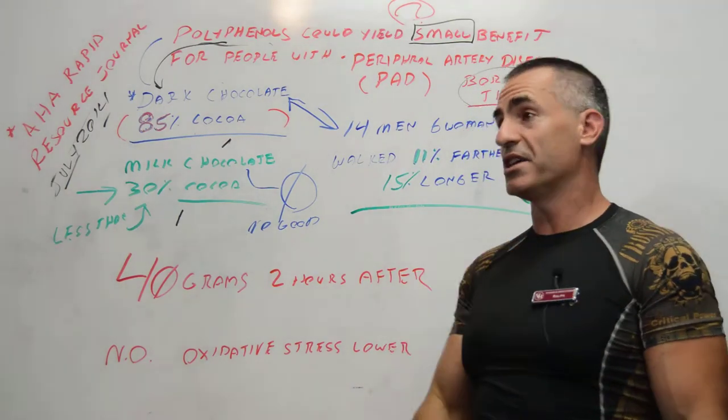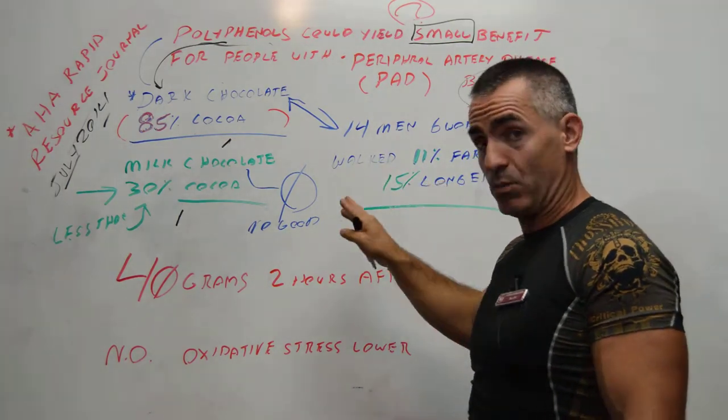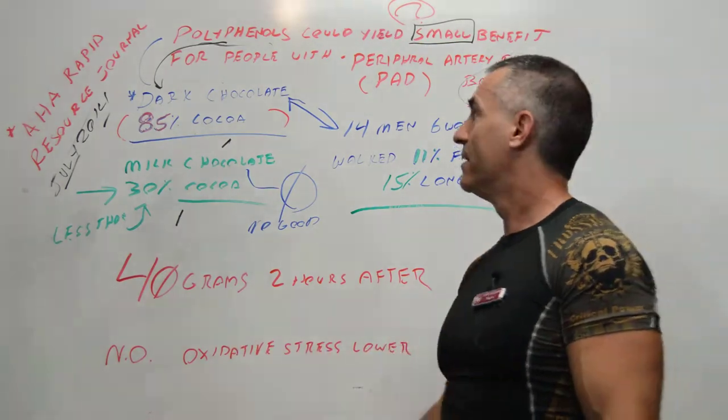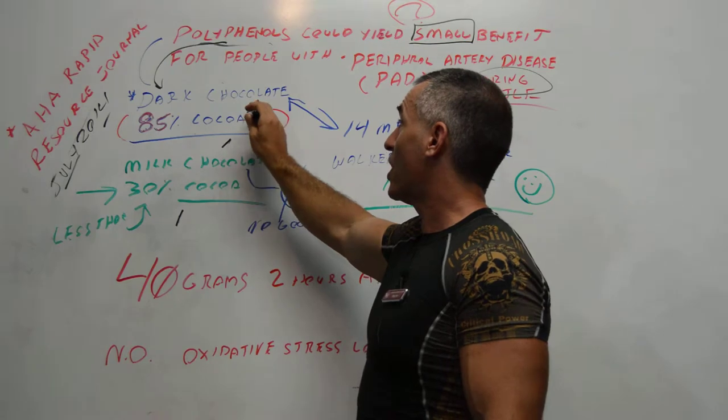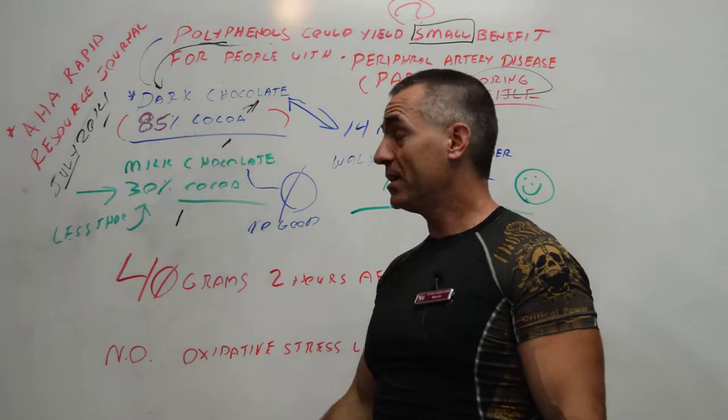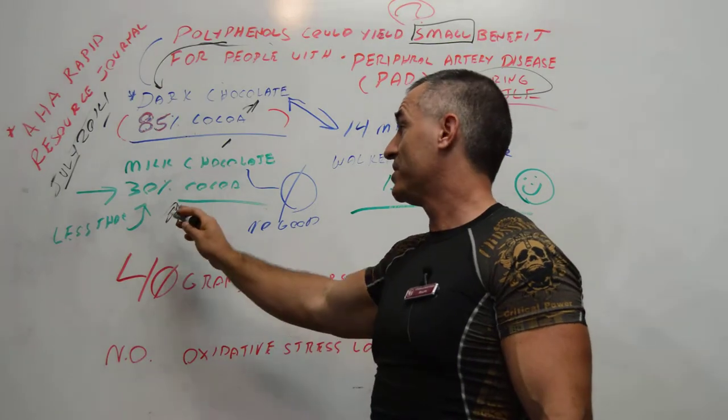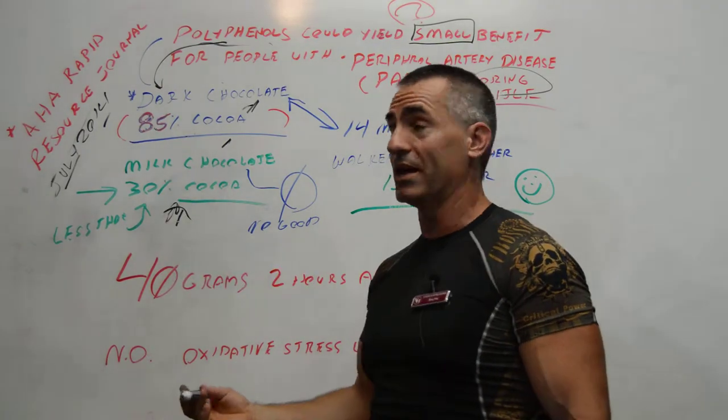What they did in the trial is they took 14 men and 16 women. One day they had them eat dark chocolate at 85% cocoa, and the other day they had them eat milk chocolate, which is normally what you see on most grocery store shelves, at 30% cocoa or less.